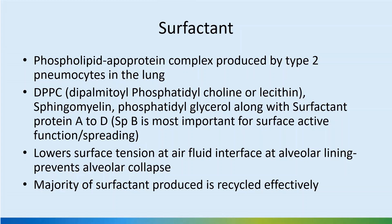Surfactant is produced by type 2 pneumocytes and production starts around 23 to 24 weeks, but it is normally not released into the fetal lung until 28 weeks. However, in pre-term deliveries, it has been shown that even at 24 to 25 weeks it may start to be released, and this process is expedited by steroid use.